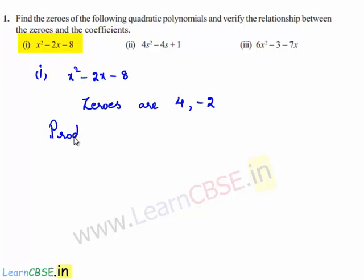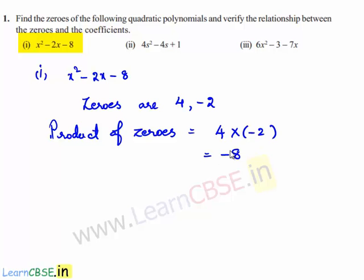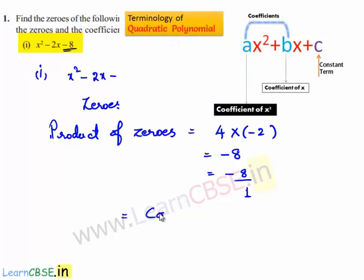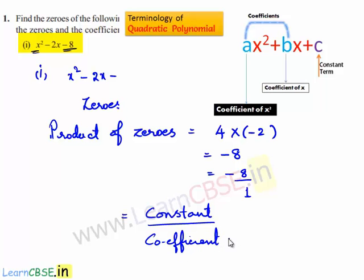The product of the zeros is 4 × (-2) = -8. So -8 can be written as -8/1, where -8 is the constant term and 1 is the coefficient of x². Therefore, the product of the zeros is equal to the constant term divided by the coefficient of x².